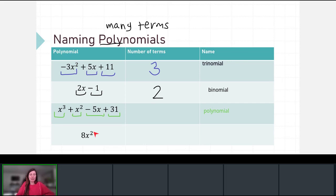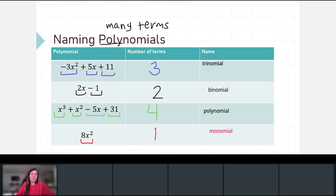Lastly, the bottom polynomial, 8x squared, has only one term. We use the prefix mono and call it a monomial. So: one term is a monomial, two-term polynomials are called binomials, three-term polynomials are called trinomials — like a tricycle for three, a bicycle for two — and if we have four or more terms, it's just a generic polynomial.